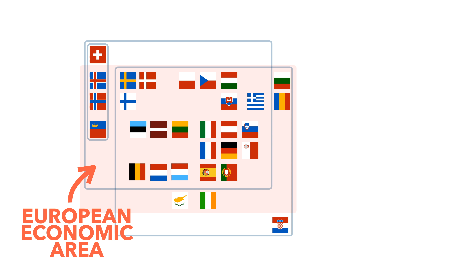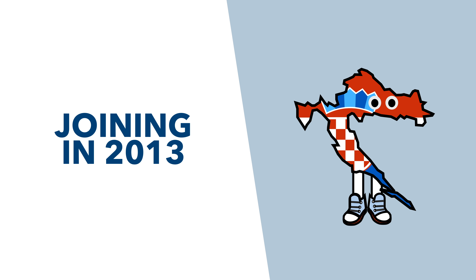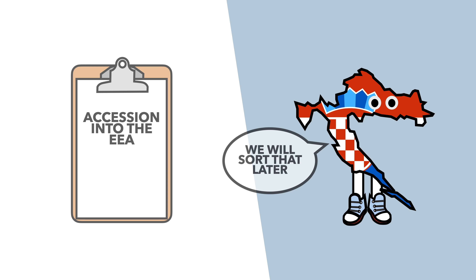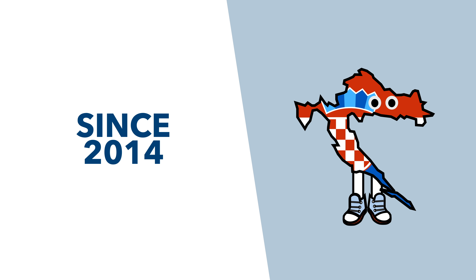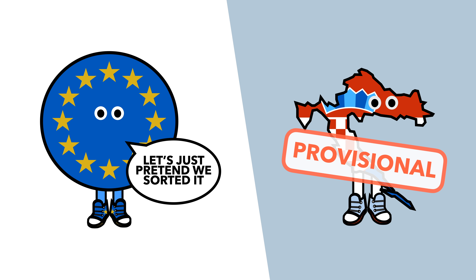Switzerland isn't the only exception. Croatia is a member of the EU, but isn't officially a member of the EEA. As the youngest member of the EU, joining only in 2013, the country hasn't finished its accession into the EEA. However, since April 2014, they have provisionally been part of the area.